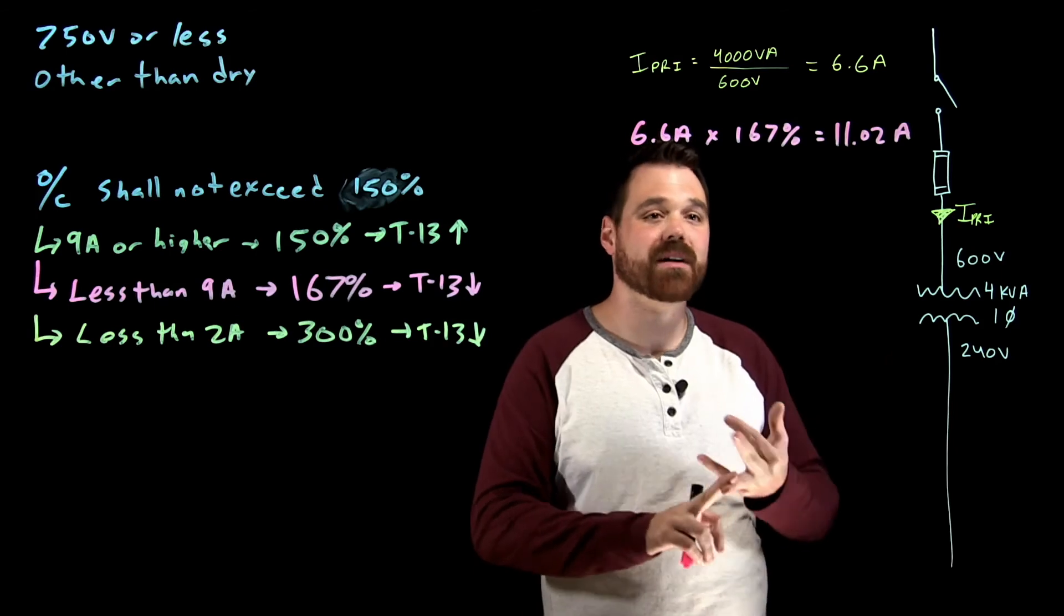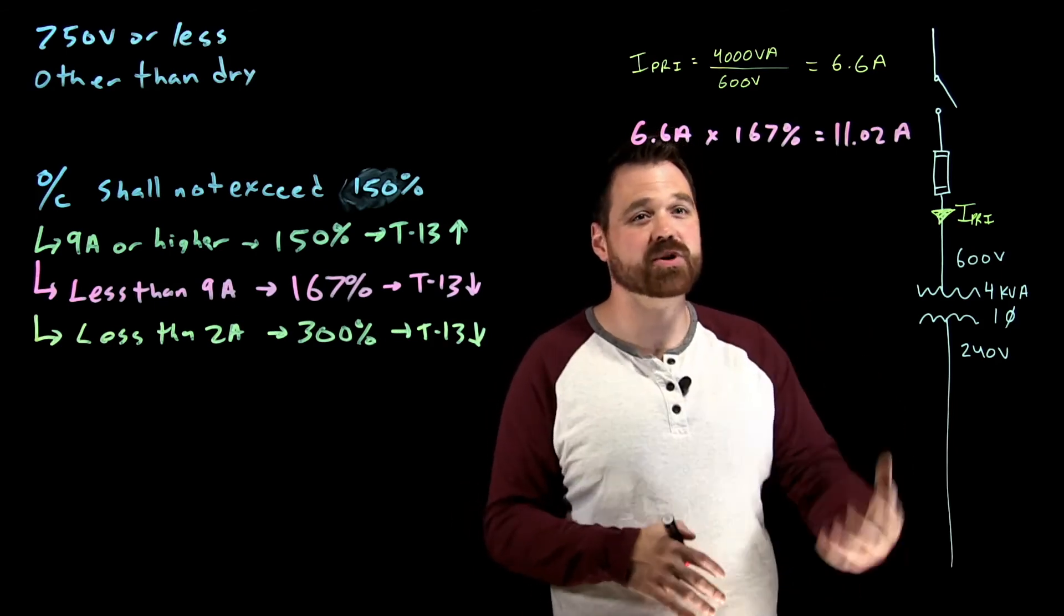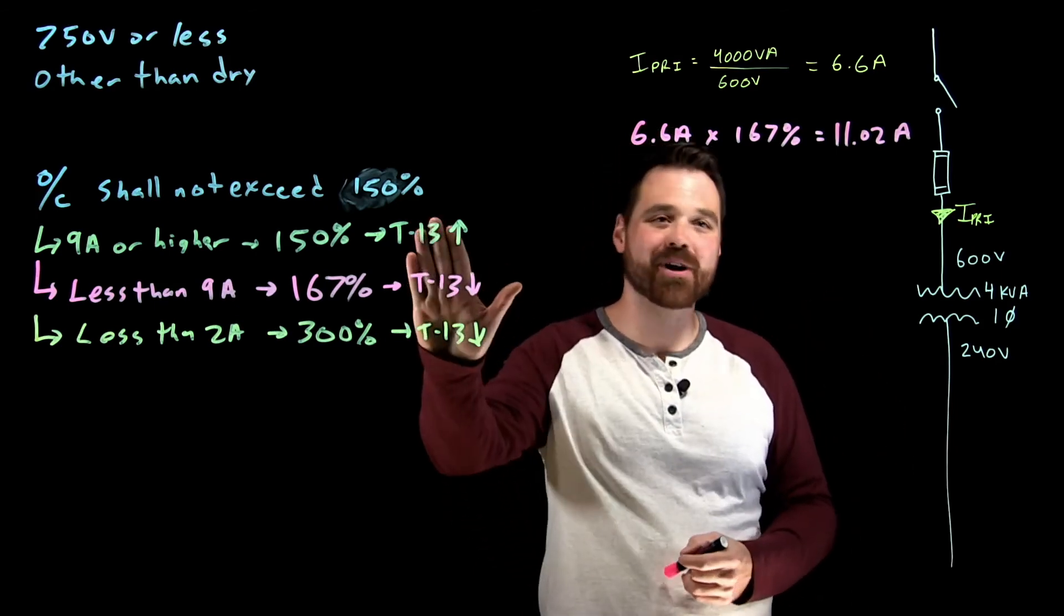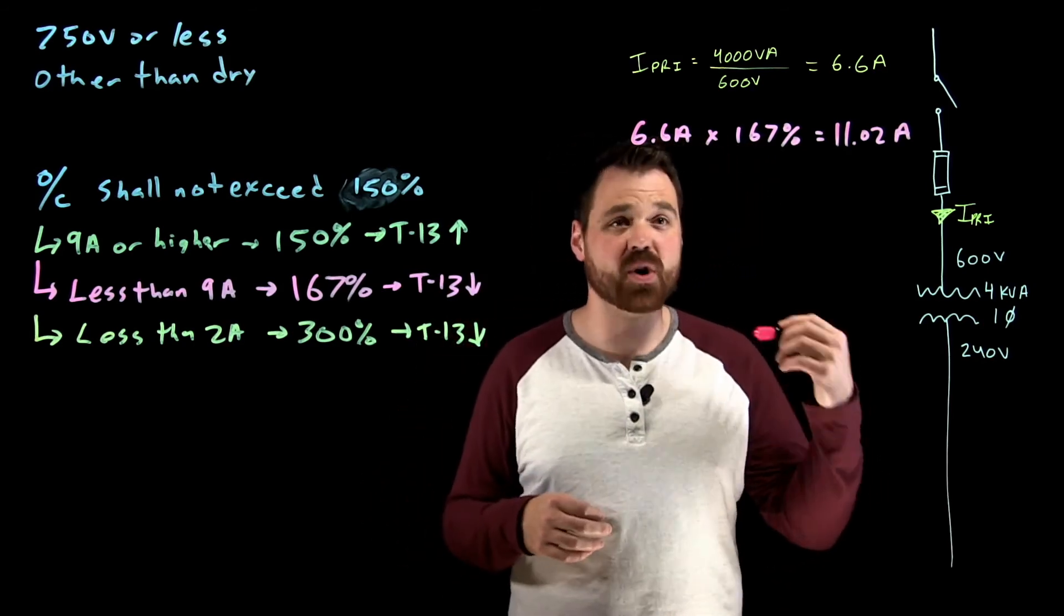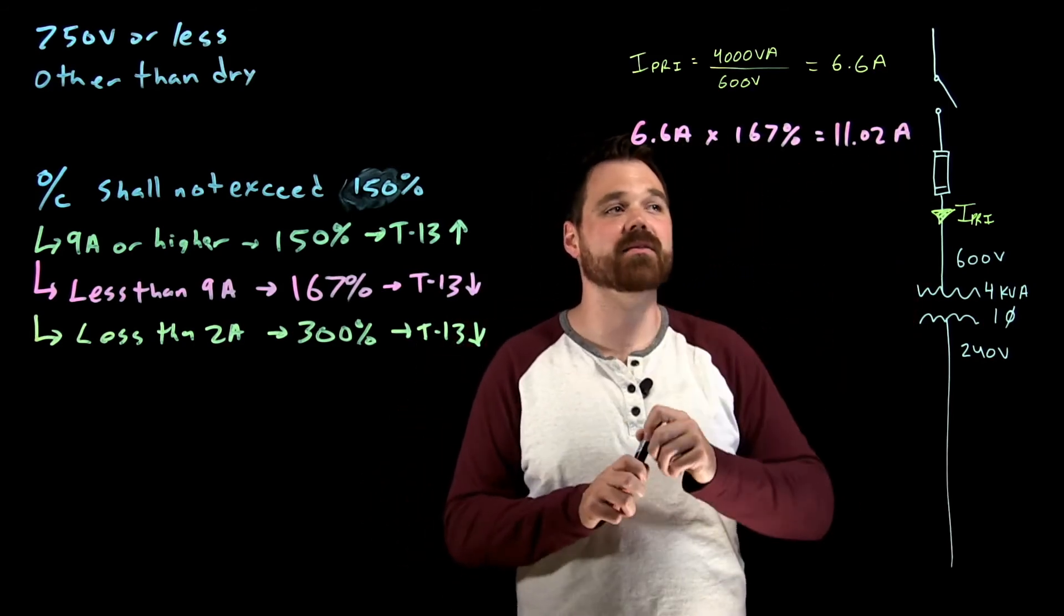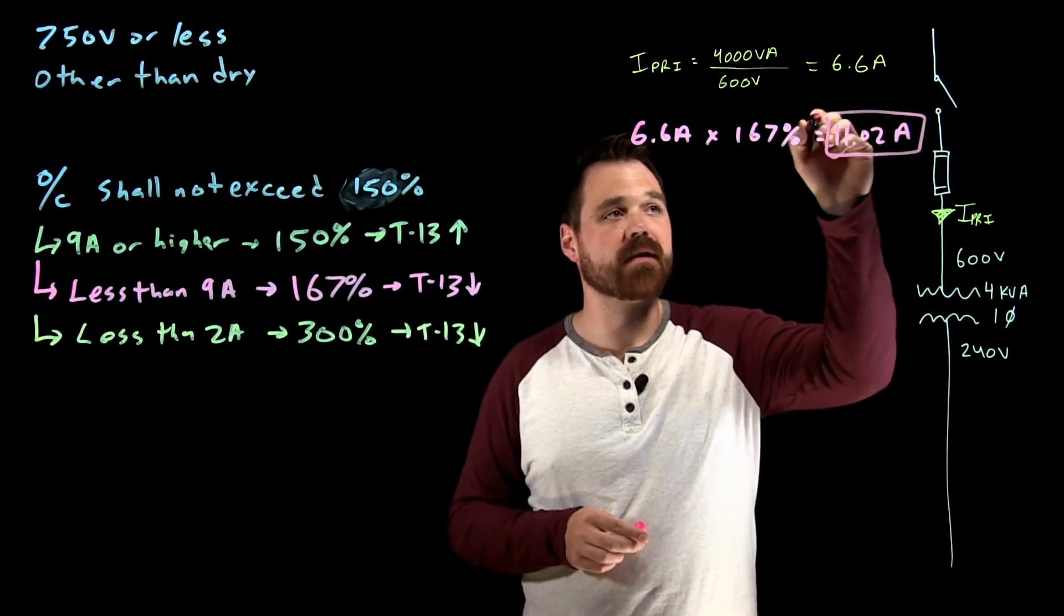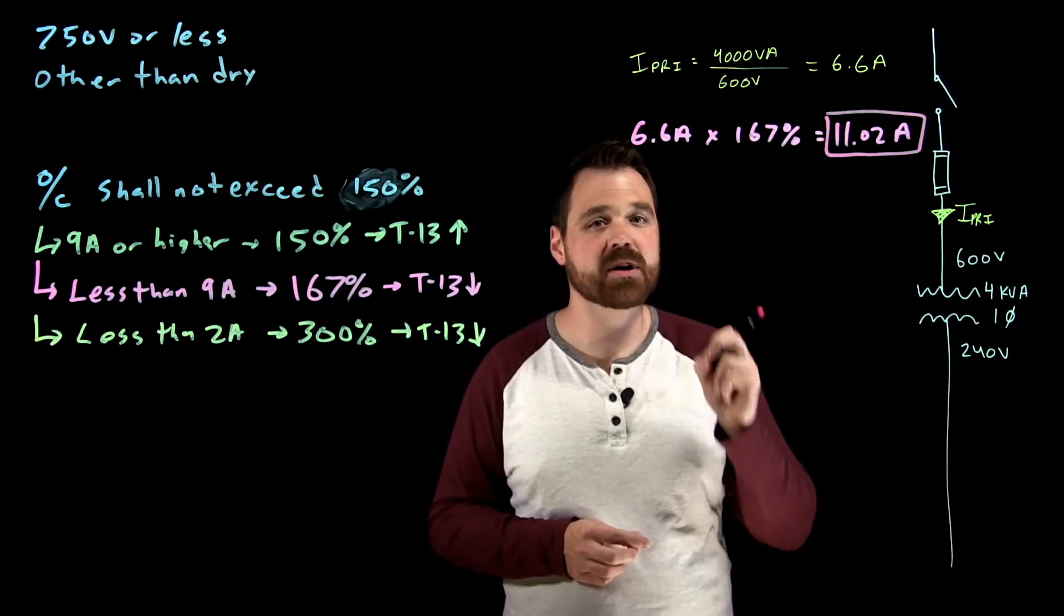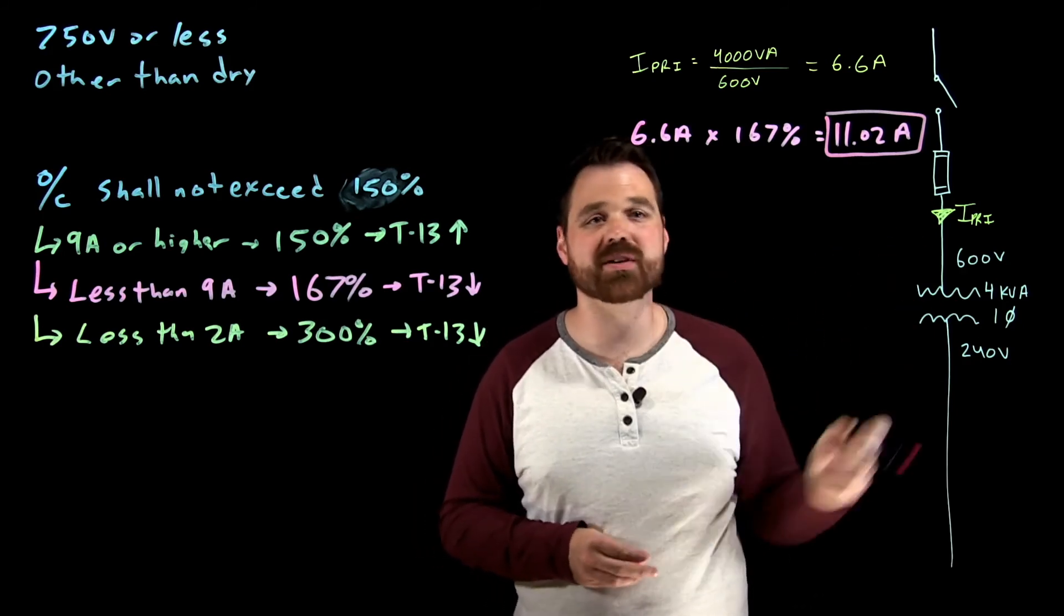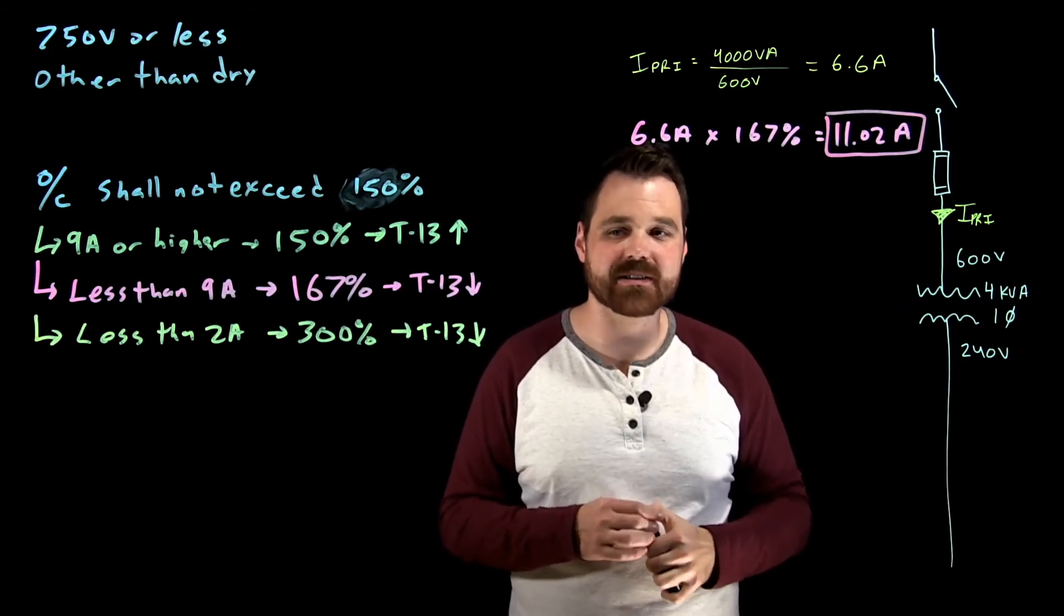Or I'm going to be going down to a 10 amp circuit breaker, which we know is available as well. But what is important here is I cannot go higher than 11.02 amps. 11.02 amps is my maximum rating or setting of overcurrent device. So I cannot exceed that.